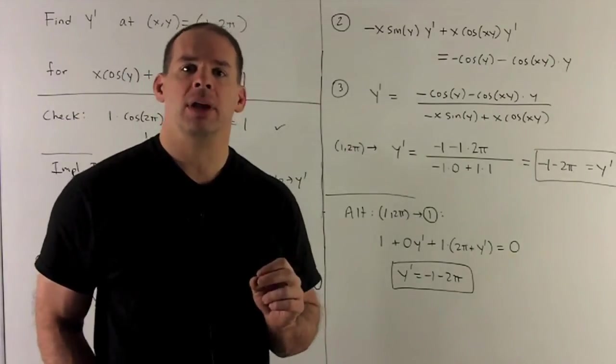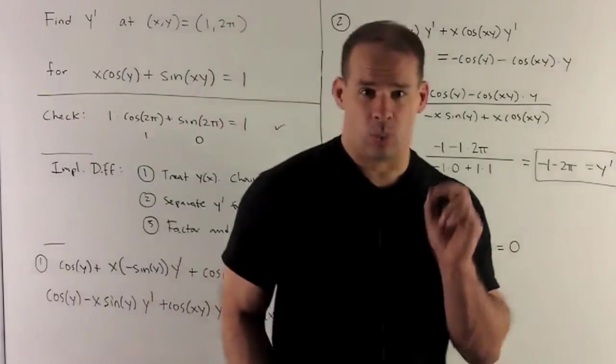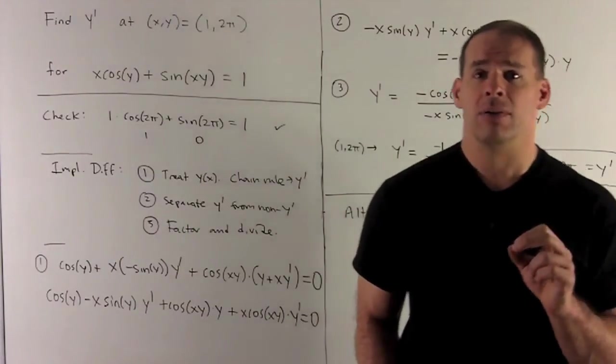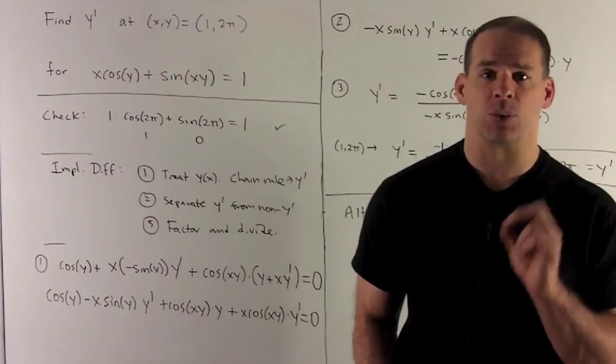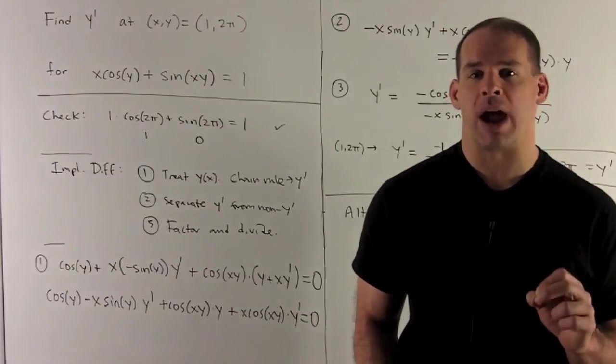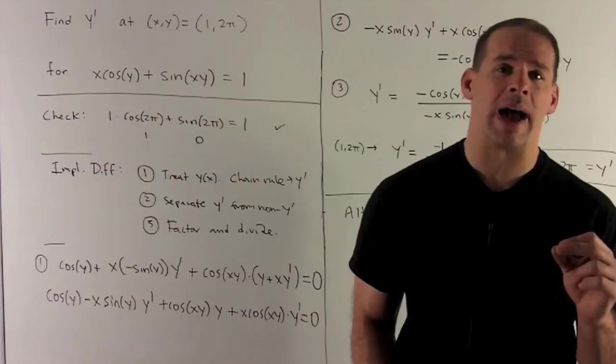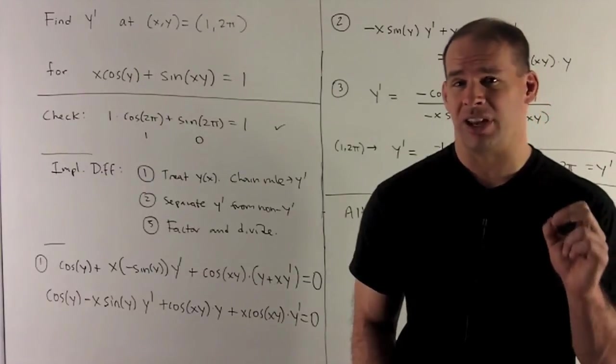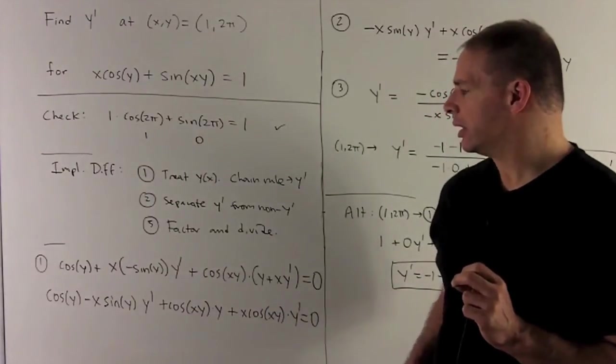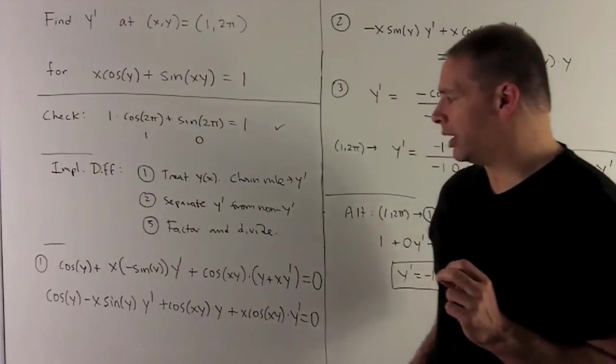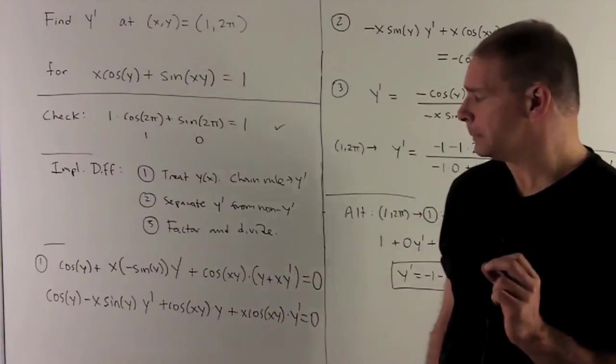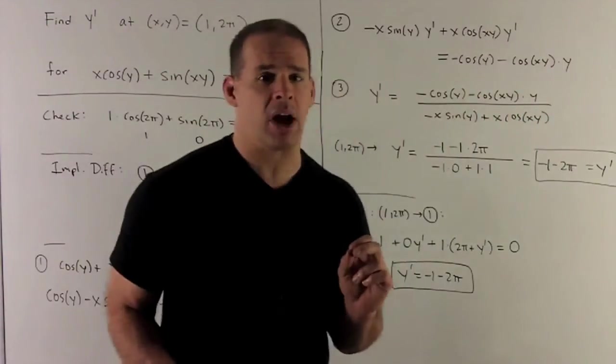Now, minor shortcut, at step 1, once I had taken all the derivatives, I could have went and put in for the (1, 2π) for x, y right there. Okay, there's no need to actually solve down to y prime in terms of a function of x and y, because since we're actually interested in a number at the end of the day, you can cut straight to your numbers as soon as you take the derivatives. So what I could do is put 1 and 2π into our equation for 1.